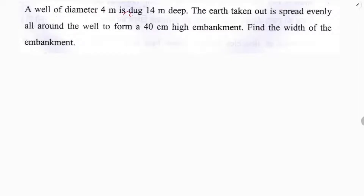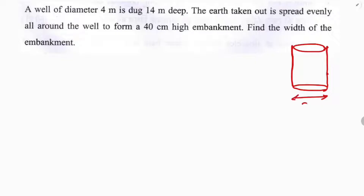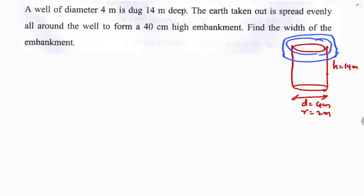A well of diameter 4 meters is dug 14 meters deep. So diameter is 4 meters, which means radius will be 2 meters and height is 14 meters. The earth taken out is spread evenly all around it to make an embankment.